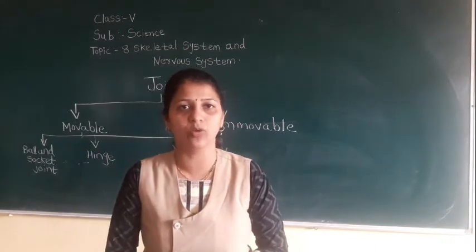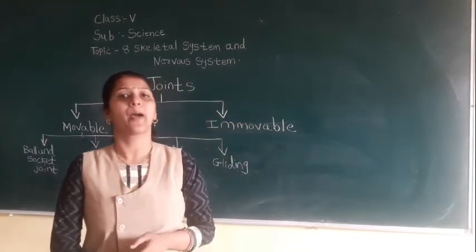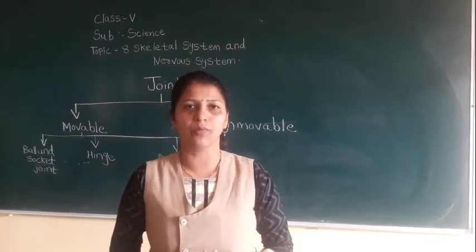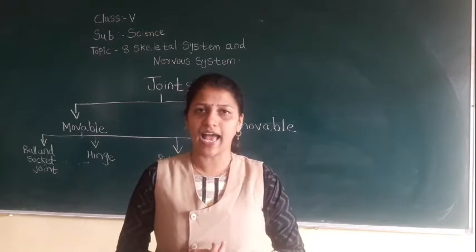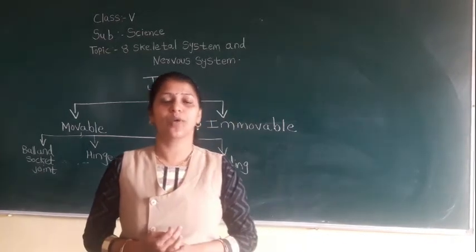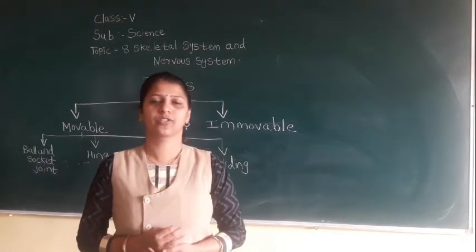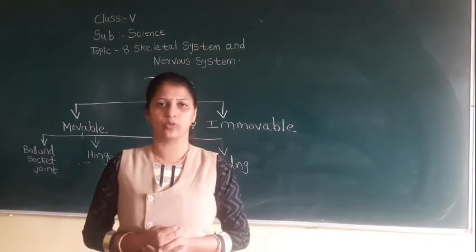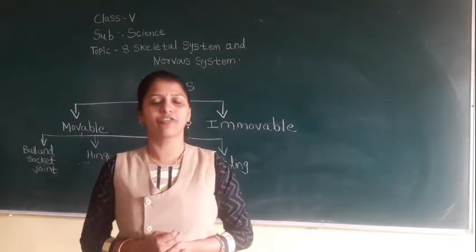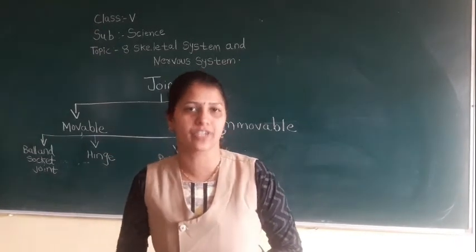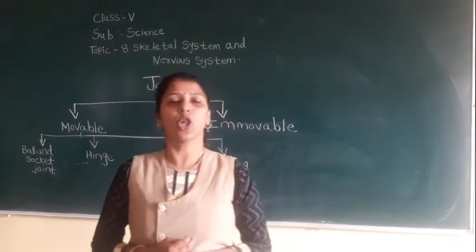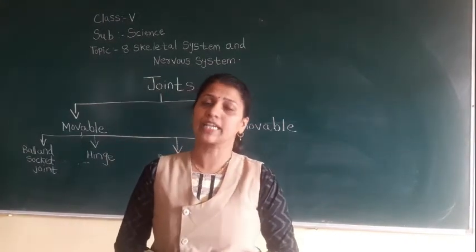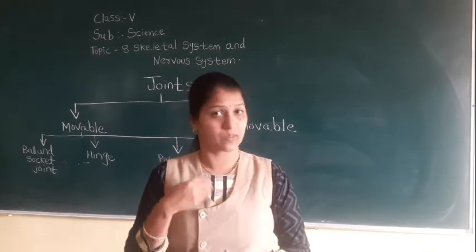We have learnt about the skull, which protects our brain. The skull has 22 bones, and these bones are fixed — except the lower jaw, which helps us for eating and speaking.